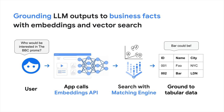By combining the Embeddings API and Matching Engine, you can use embeddings to ground LLM outputs to real business data with low latency. For example, if a user asks a question, the Embeddings API can convert it to an embedding and issue a query on Matching Engine to find similar embeddings in its index. Those embeddings represent the actual business data in the databases.